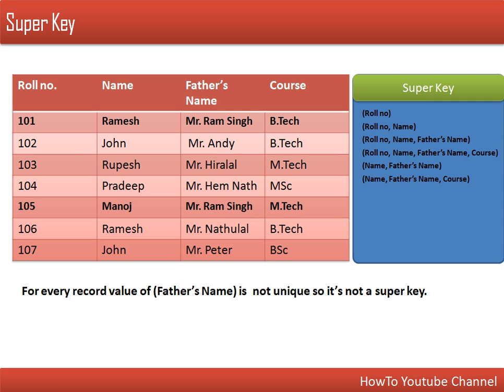Now have a look at father's name as a single attribute. In the father's name attribute, we have a value 'Mr. Ram Singh' that is repeated for another record. This is not a unique identification — this attribute has repeated values and therefore cannot uniquely identify a record. So father's name cannot be considered as a super key.